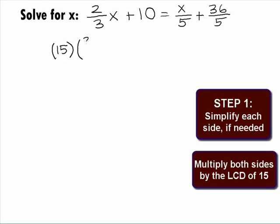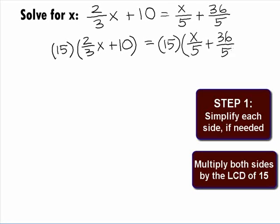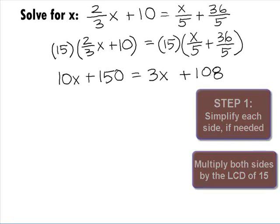On the left side, this will give us 15 times 2/3x plus 10 equals, and on the right side, we have 15 times x/5 plus 36/5. On the left side, when we multiply the 15 times 2/3x, we get 10x and 15 times 10 is 150. On the right side, when we multiply the 15 times x/5, we get 3x and 15 times 36/5 gives us plus 108.